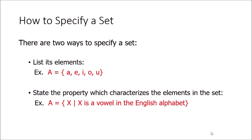There are two methods to specify a set. In the first method, you list all the elements — for example, A = {a, e, i, o, u} written within curly brackets. In the second method, you state the property that characterizes the elements. Rather than listing all elements, you write a description such as: x is a vowel in the English alphabet.